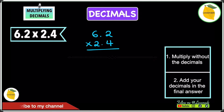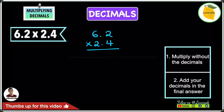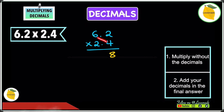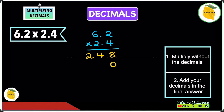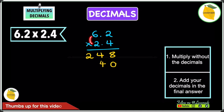Let's start by doing 4 times 2, which gives us 8. Then we do 6 times 4, which gives us 24. Moving on to the next line, we add a 0. Next up, we do 2 times 2, which gives us 4. Then we do 6 times 2, which gives us 12.